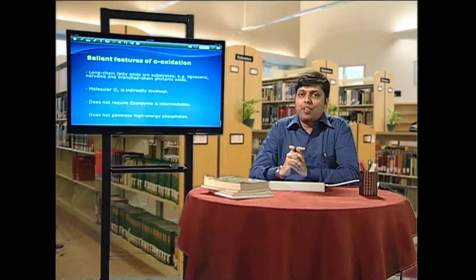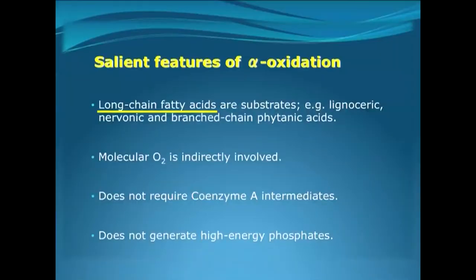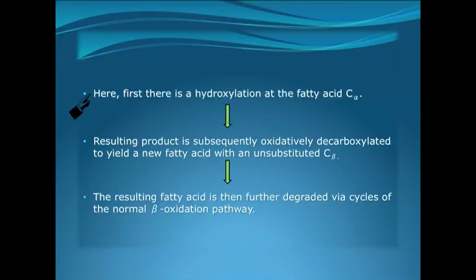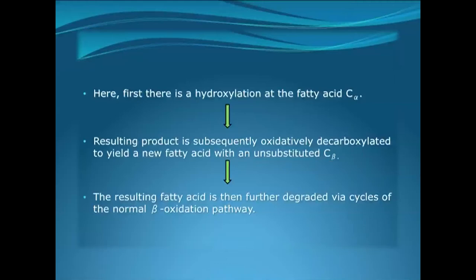Some salient features of alpha oxidation: it is applicable only for long-chain fatty acids like lignoceric acids, nervonic acids, and branched-chain phytanic acids. Molecular oxygen is indirectly involved and there is no generation of any high-energy-rich phosphates. In the mechanism, first there is a hydroxylation reaction at the fatty acid C-alpha atom, followed by an oxidative decarboxylation reaction of this alpha-hydroxy fatty acid to yield a fatty acid with an unsubstituted C-beta. This compound then enters the mitochondria for beta-oxidation.